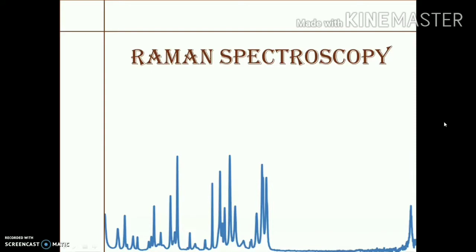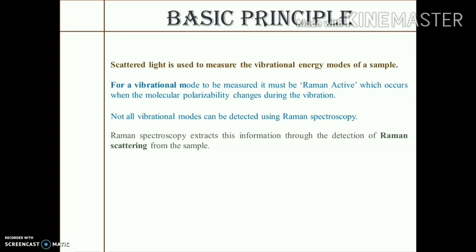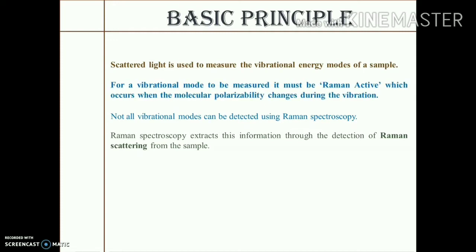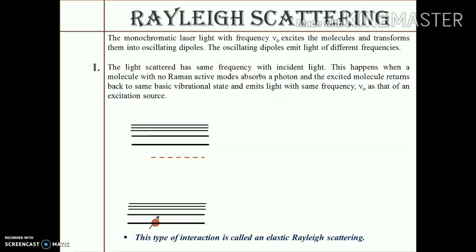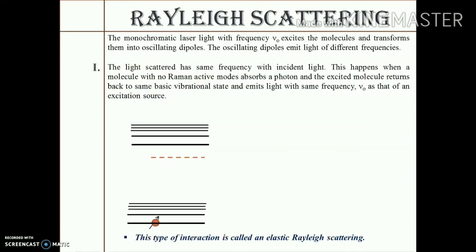We started with Raman spectroscopy in our last video with the basic principle that scattered light is used to measure the vibrational energy modes of any sample under investigation. For a vibrational mode to be measured, the sample must be Raman active, which occurs when the molecular polarizability changes during vibration. Not all vibrational modes can be detected using this technique, which extracts its information from the Raman scattering of the sample.